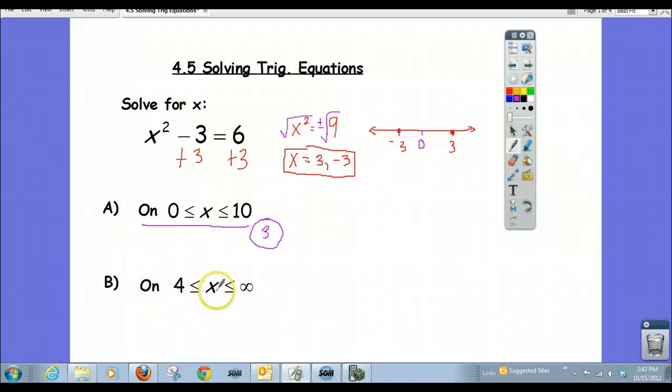In example B, we've got our interval being 4 less than or equal to x less than or equal to infinity. In other words, we only want answers that occur to the right of 4 and onto x values up to infinity. Well, we found the only two x values that work here. And neither of them falls on the interval 4 to infinity, so this would have no solution.